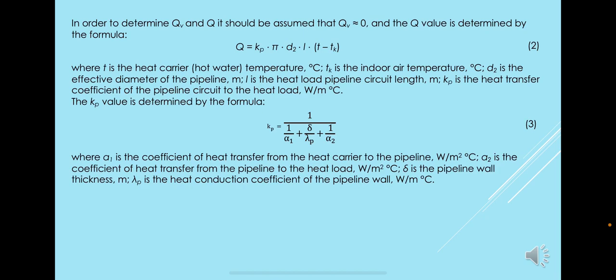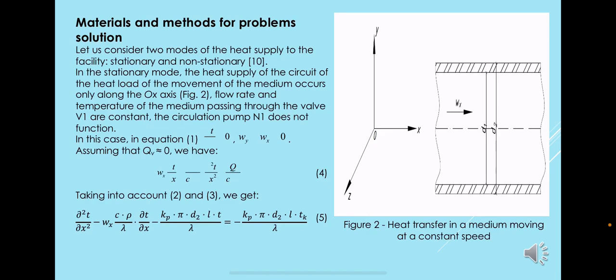Materials and methods for problem solution: let us consider two modes of the heat supply to the facility, stationary and non-stationary. In the stationary mode, the heat supply of the circuit of the heat load occurs with movement of the medium only along the OX axis, as you can see in Figure 2.